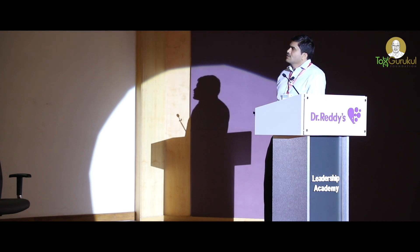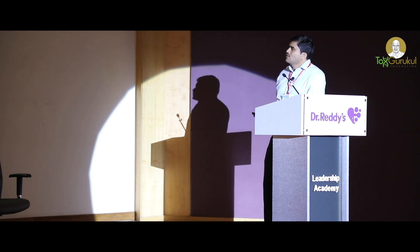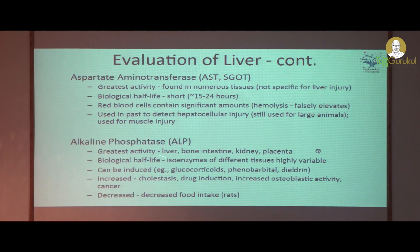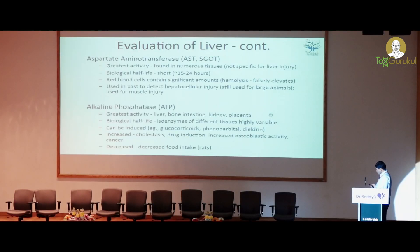ALP has the greatest activity in liver, bone, intestine, kidney, and placenta. The biological half-life and isoforms of different tissues are highly variable and can be induced by glucocorticoids. It is mainly relevant in dogs and can also be induced by phenobarbital. ALP is increased in cholestasis, bile duct damage, drug induction, osteoblastic activity, and in cancer. In rats, since ALP is contributed mainly by the intestines, if there is any decrease in feed intake, ALP levels in the table will be lower and this can be correlated to decreased feed intake.